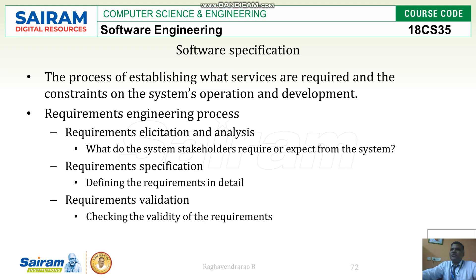The requirements engineering process contains three points: requirements elicitation and analysis, specification, and validation. System stakeholders and experts define how the process and analysis will be done for requirements. Detailed specifications are analyzed and then validated. All these things are done before implementation — at this stage we are just collecting requirements.